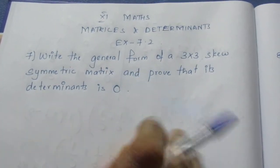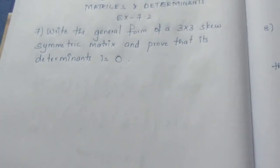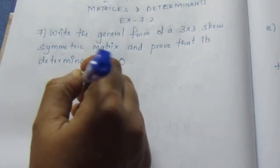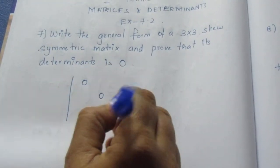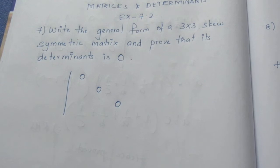If you have this skew symmetric, you can write it as a small issue. How do you write it? Diagonal is 0.